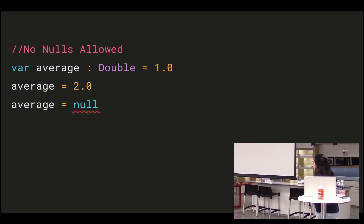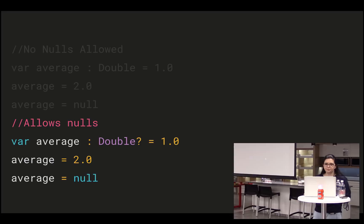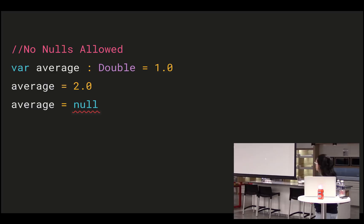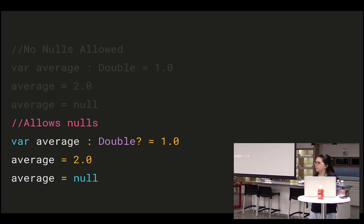In this example, I have a var average of type Double assigned a value of 1, then changed to 2. If I try to assign null — which would work in Java — Kotlin won't compile it because it's not a nullable type. If you want a nullable type you add a question mark at the end of the type declaration. This is similar to C# as well. Now you're saying this variable can store a null value, and there's no problem assigning null.